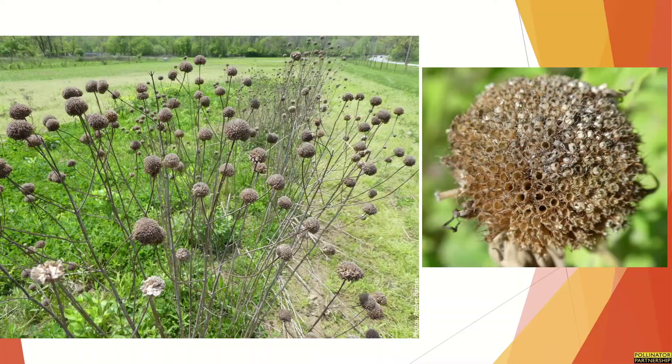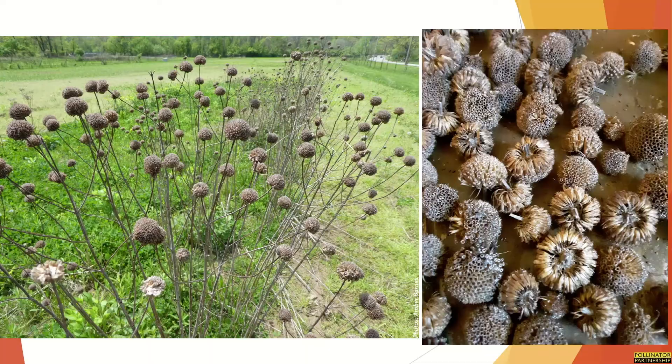Other target species on our list, such as Monarda fistulosa or wild bergamot, have single seed heads or pods on a stem. These are some of the easiest to collect — simply cut off the seed head or pod and place that into your collection bag.